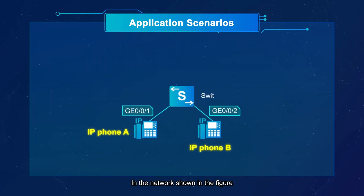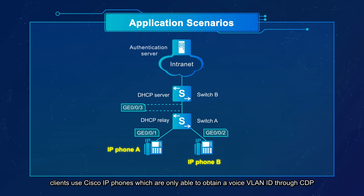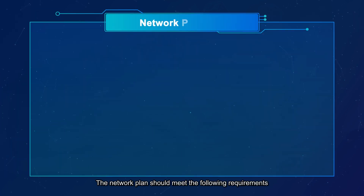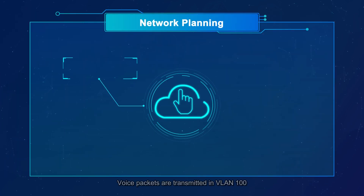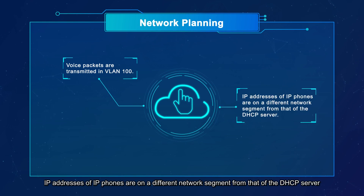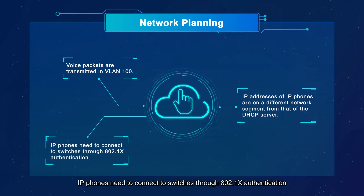In the network shown in the figure, clients use Cisco IP phones which are only able to obtain a voice VLAN through CDP, and voice packets sent by IP phones have a low cost priority. The network plan should meet the following requirements: voice packets are transmitted in VLAN 100, IP addresses of IP phones are on a different network segment from that of the DHCP server, and IP phones need to connect to switches through 802.1x authentication.